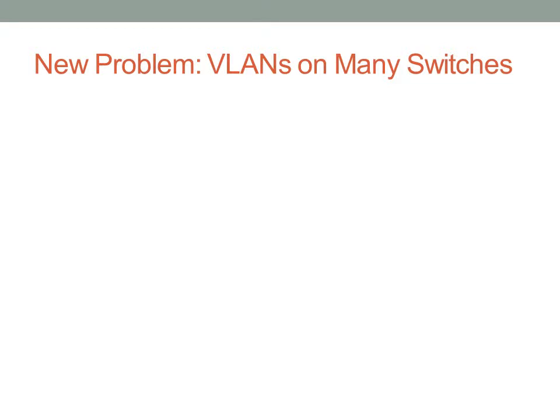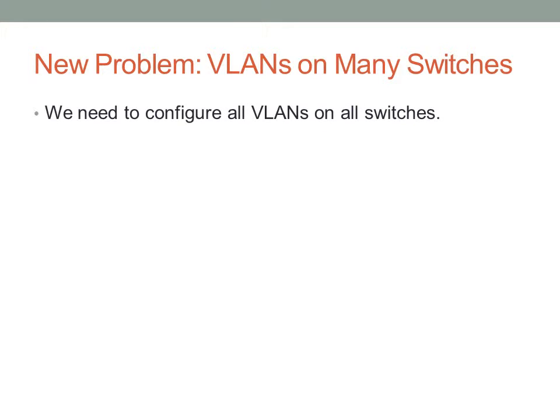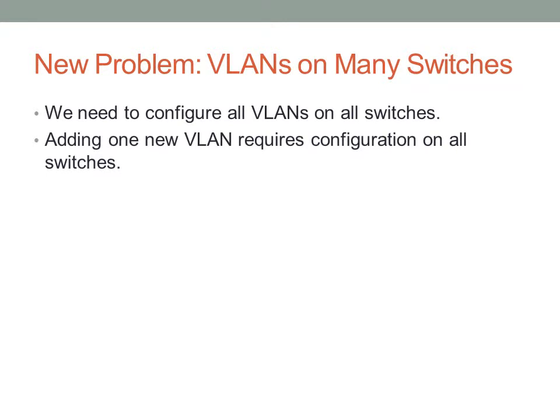Now we run into a new problem: configuring VLANs on several switches can take a while. We need to configure every single VLAN on every single switch. By default on Cisco switches there is only one VLAN — VLAN 1. To add a new VLAN, we have to add it on every single switch that needs to pass that VLAN's traffic. For example, with three switches connected linearly, even if the middle switch has no VLAN 2 ports, it still needs to pass VLAN 2 traffic, so VLAN 2 must be created on all three switches. This can become quite a pain for network engineers.